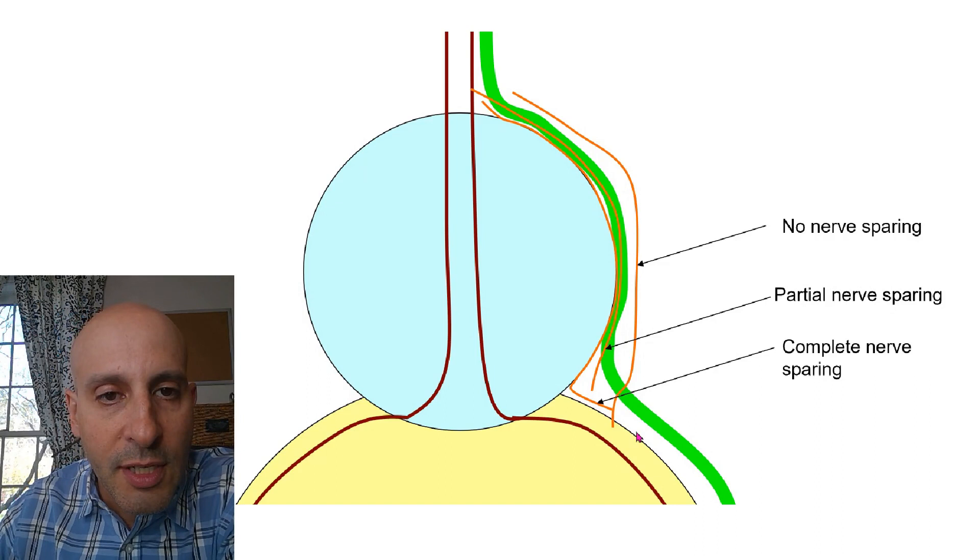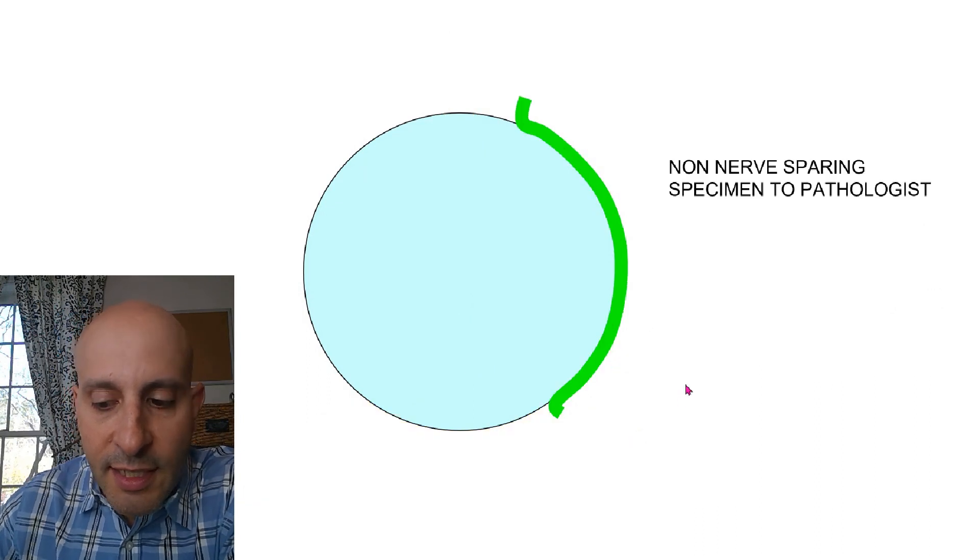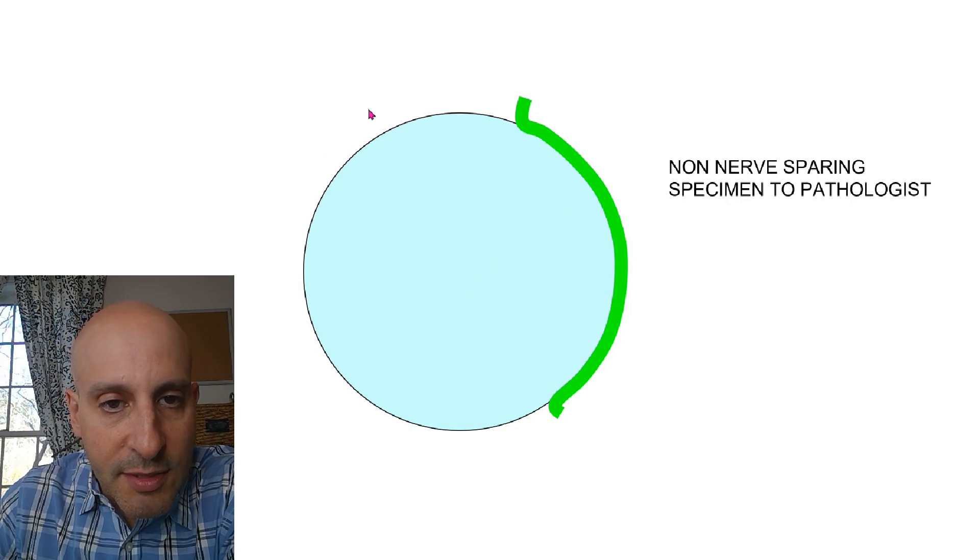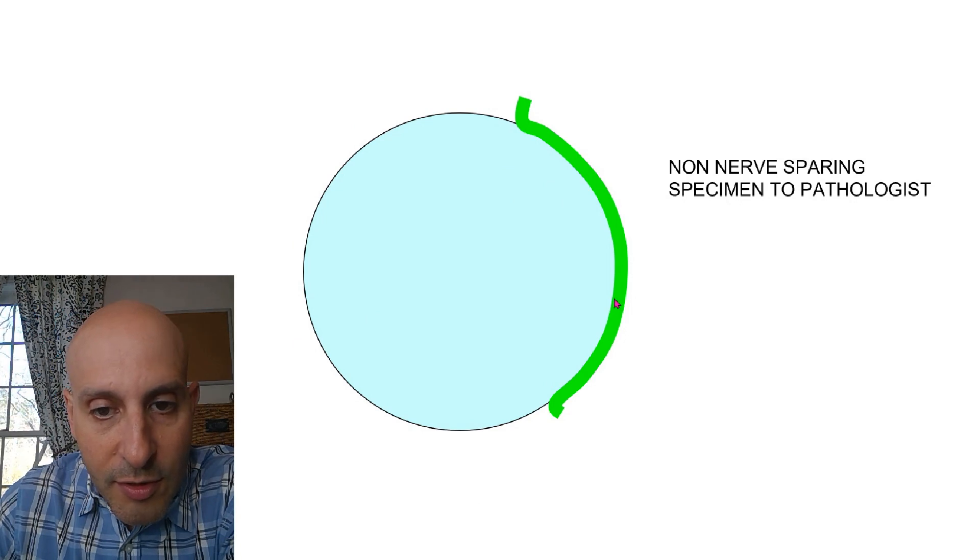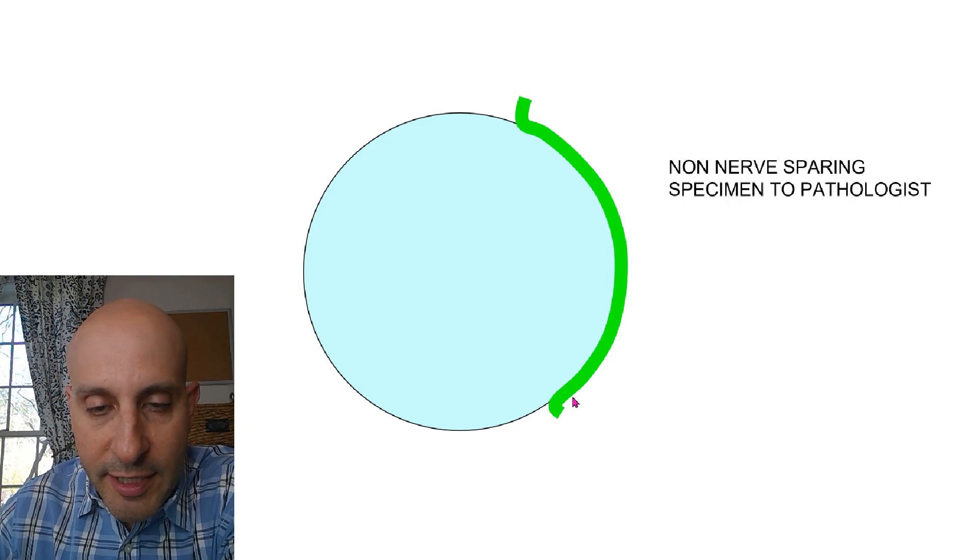Now think about this in terms of what the pathologist sees. If you do a non-nerve sparing on this side, this is what the specimen will look like to the pathologist. It's a prostate with all of the neurovascular tissue stuck to the prostate, covering it on the right side.